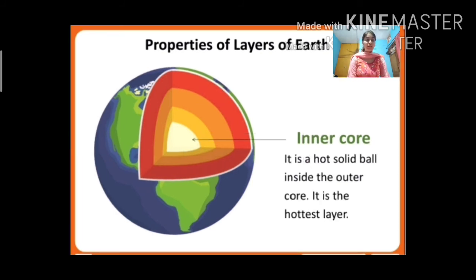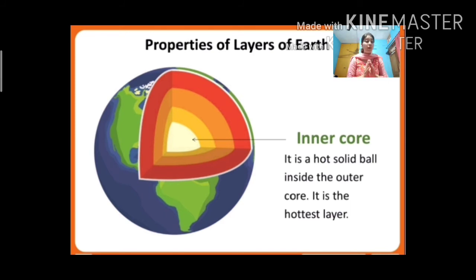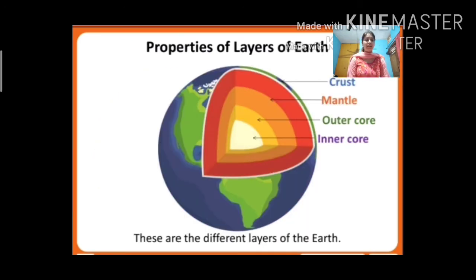After the outer core comes the inner core. It is a hot solid ball — it is the hottest and deepest layer. So the layers of the earth are: crust, mantle, then core, and the core has two parts — outer core and inner core. We have now learned the layers of the earth and their properties.